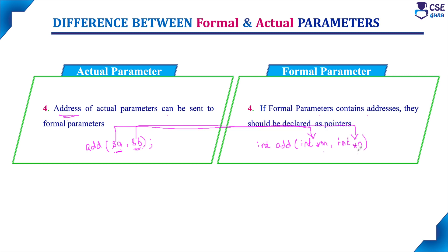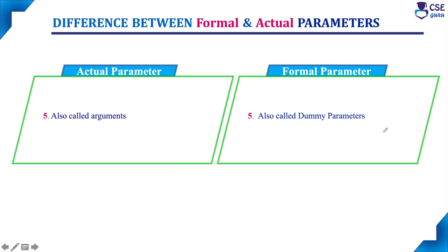The actual parameter will send the address, and the formal parameter as a pointer variable will refer to that address and access the value stored in it. The formal parameter is otherwise called dummy parameters.